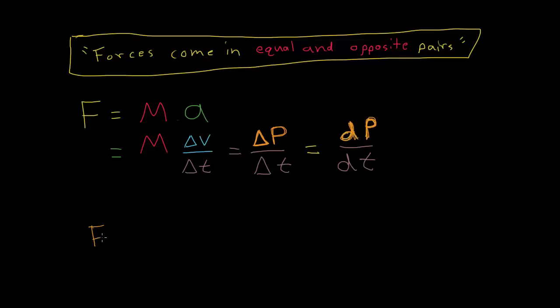So now we see that force is the rate of change of momentum, dp dt. Now if we look at what we said at the beginning of this video, that forces come in equal and opposite pairs, that means that changes in momentum also come in equal and opposite pairs.